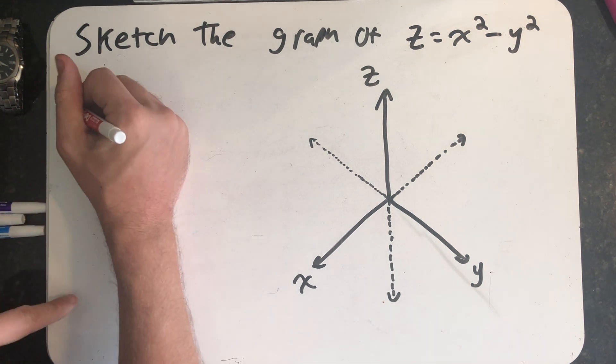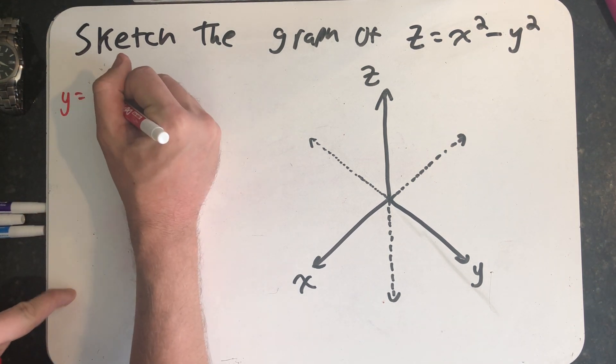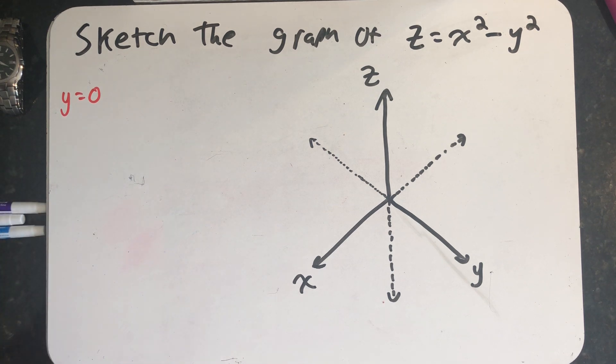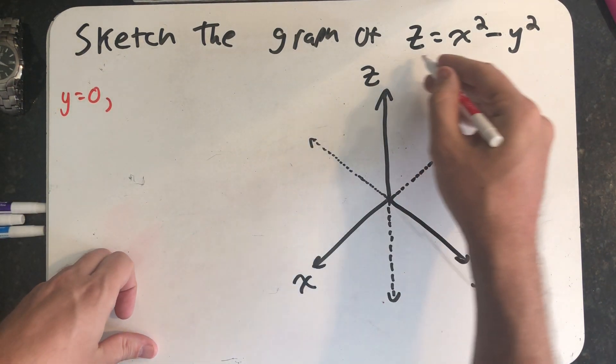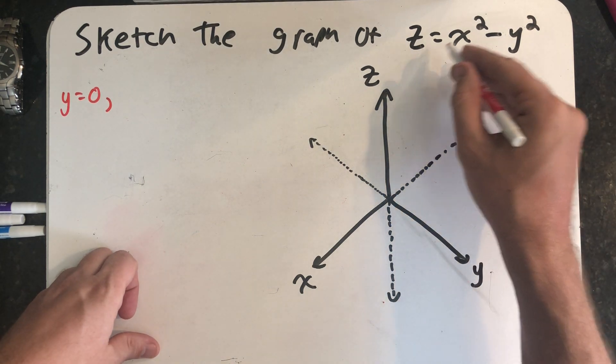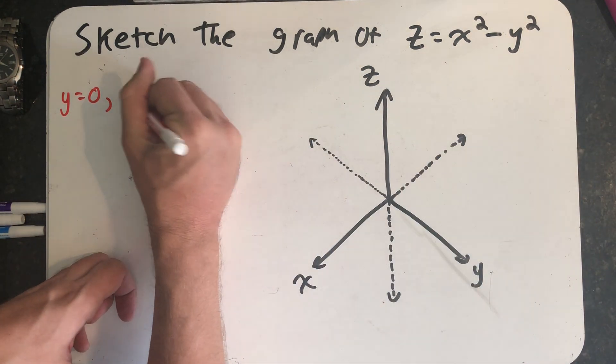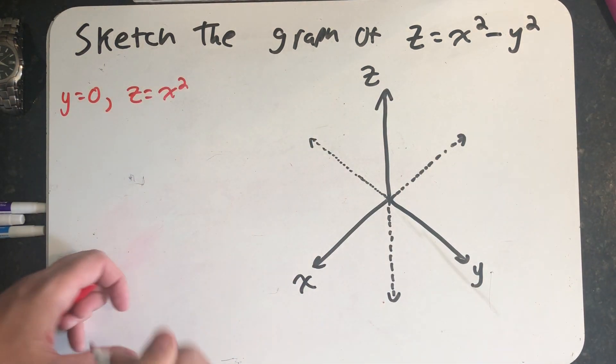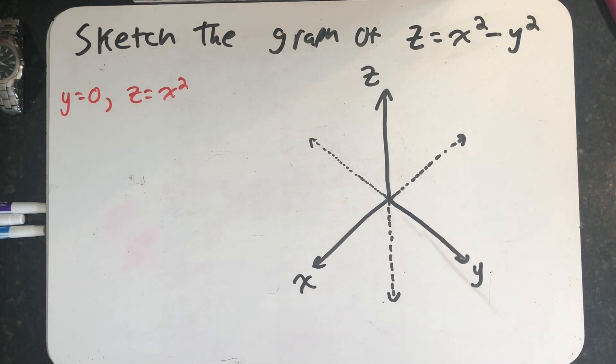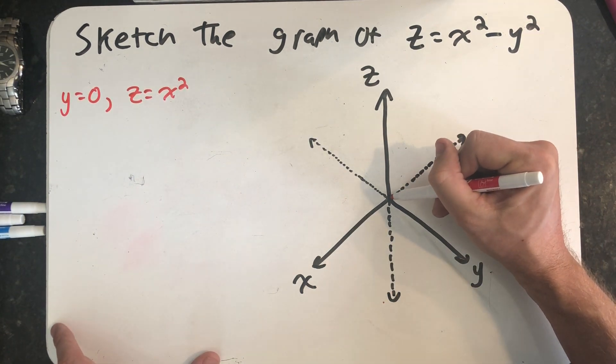The first slice I want to think about is what happens in the xz plane, or where y is equal to zero. When y is equal to zero, this equation becomes z equals x squared. In the xz plane, that's simply a parabola that faces up and goes through the origin.